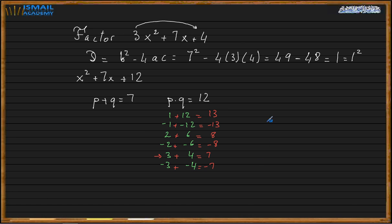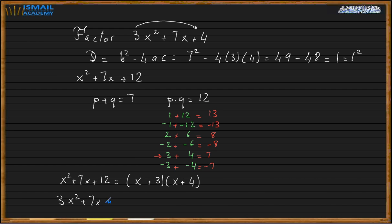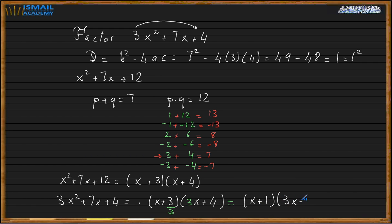So x squared plus 7x plus 12 equals x plus 3 times x plus 4. Now, which of those numbers is divisible by 3? The number 3 is divisible by 3. So for my final answer for 3x squared plus 7x plus 4: I divide 3 by 3 and multiply the other x by 3, giving x plus 1 times 3x plus 4.